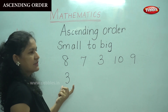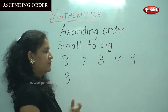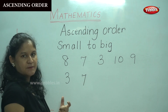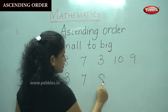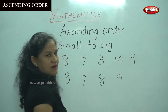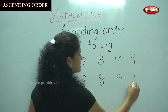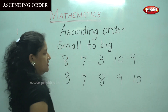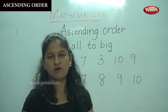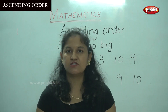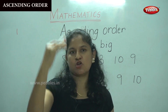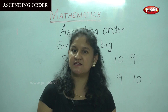The next small number is 7. The next number is 8. The next is 9. And the biggest number is 10. So we have placed these numbers in ascending order, that is from small to big, just as we go from down to top. This is known as ascending order.